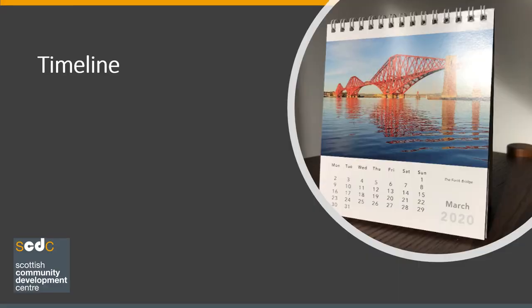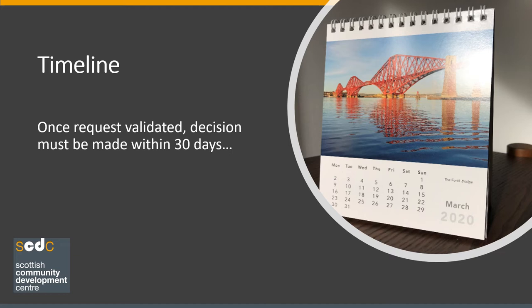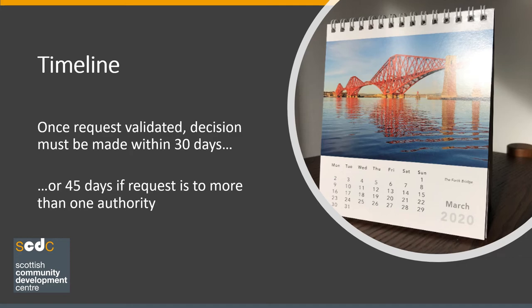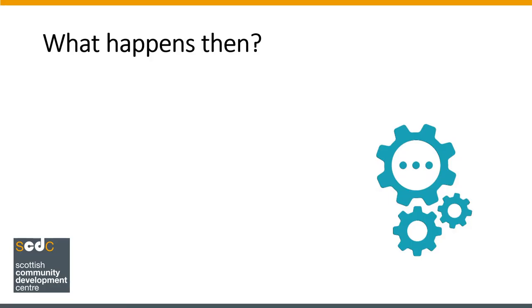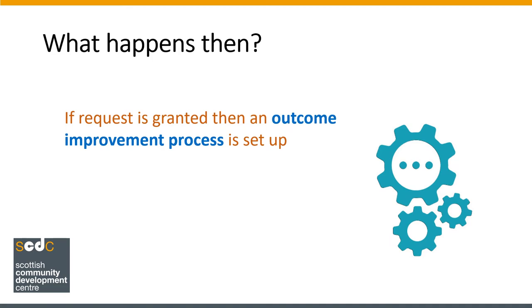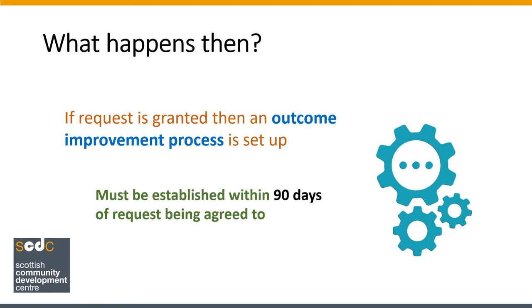So we've looked at the form and learned about how to word an outcome, so you're pretty much there. But once you actually submit the form, how long will things take? First of all, the form must be validated as correctly filled in and you should receive notification of this. Once the request is validated, the decision must be made within 30 days, or 45 days if the request is to more than one authority. You'll receive a decision notice saying whether or not the request has been granted and why. If your request has been agreed to, the decision notice must also describe what the outcome improvement process will be and how you will be involved. Remember, the outcome improvement process is the formal discussion where your group gets to contribute ideas and hear others around how to improve the service. This process must be established within 90 days of the request being agreed to.